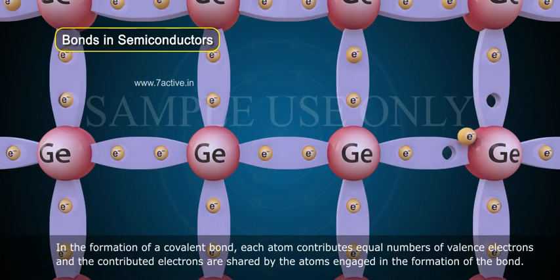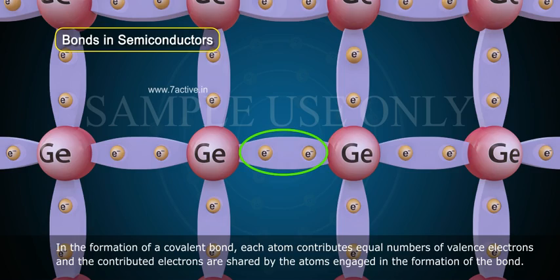In the formation of a covalent bond, each atom contributes equal number of valence electrons and the contributed electrons are shared by the atoms engaged in the formation of the bond.